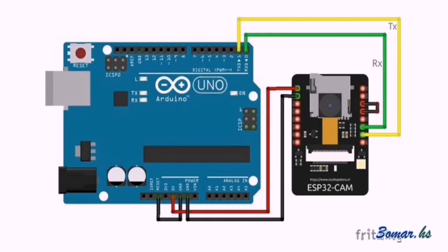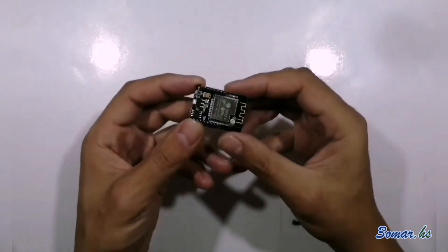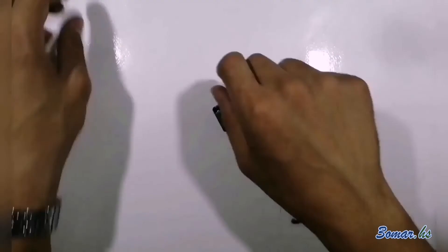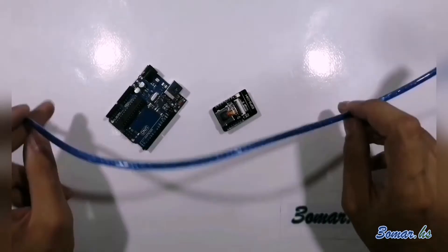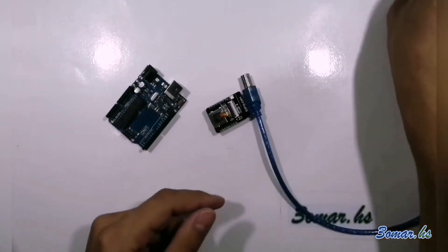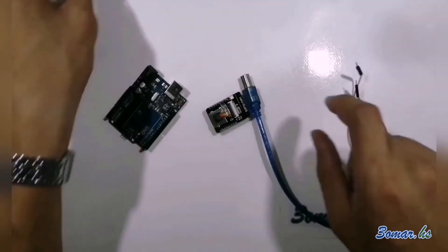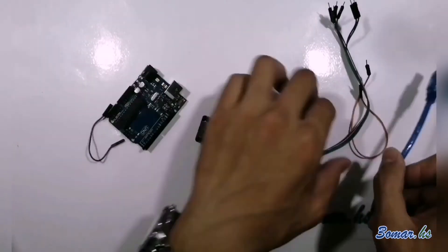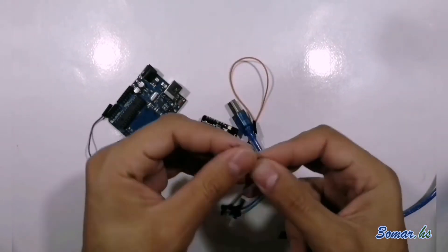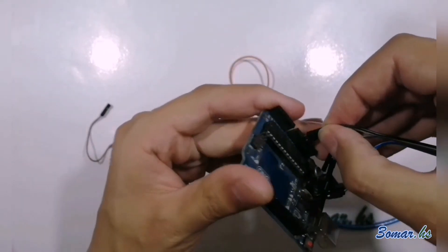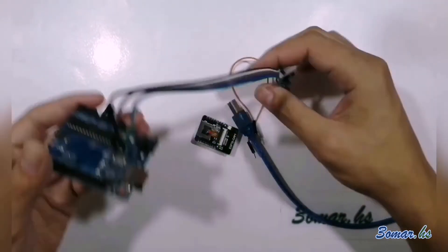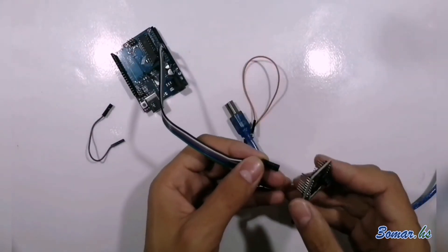Here is the circuit diagram to upload the code on the ESP32 camera module, along with the parts you need. Connect them together as shown in the diagram given in the description.